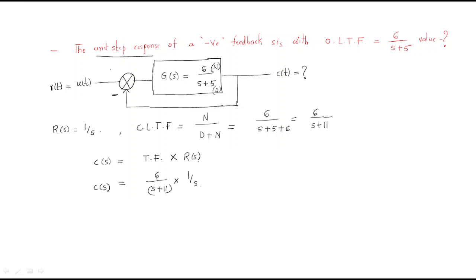To find the time domain response we need to do partial fraction decomposition. We separate C(s) = 6/[s(s+11)] into A/s + B/(s+11).